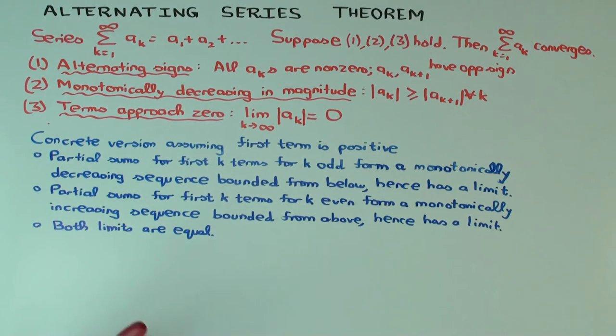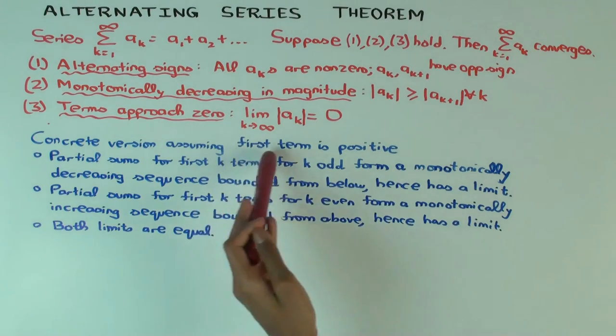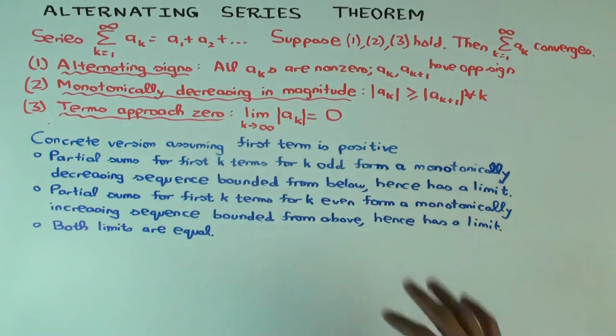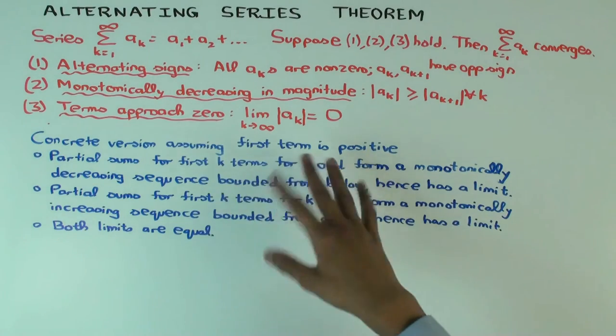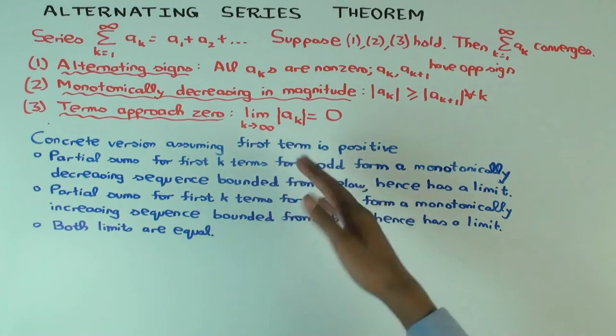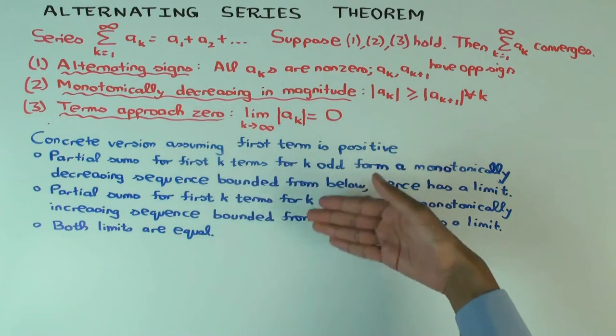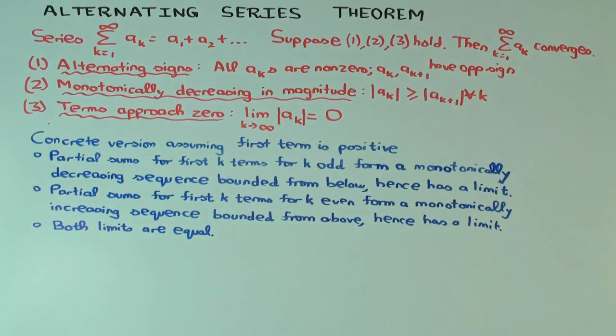So that's essentially the proof. And of course, if the first term was negative, then the odd and even roles would get interchanged when I write this. One can make counterexamples for each of these conditions being violated, and I'll discuss that in a separate video.